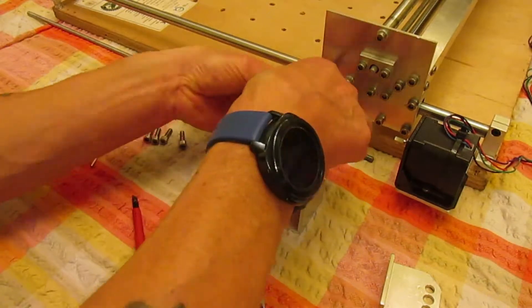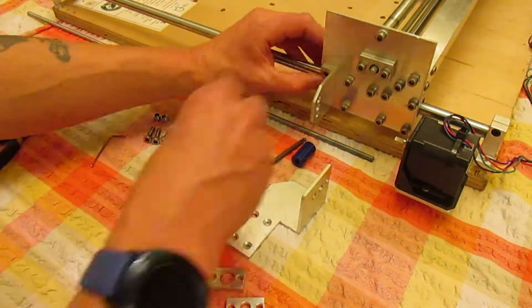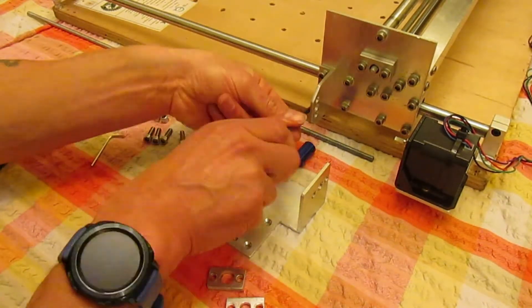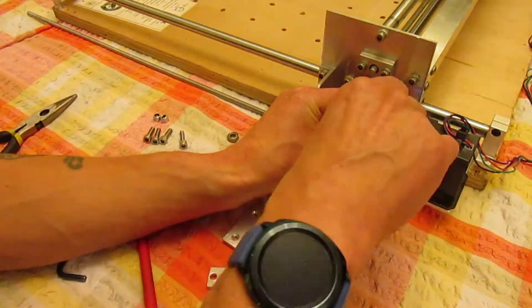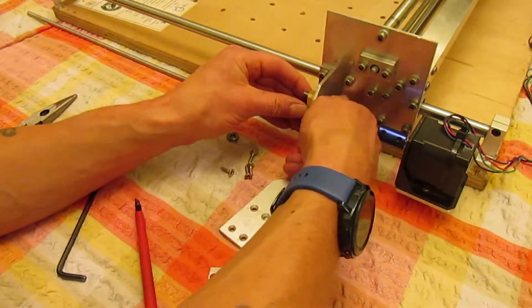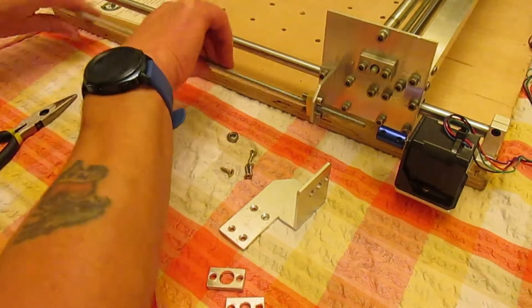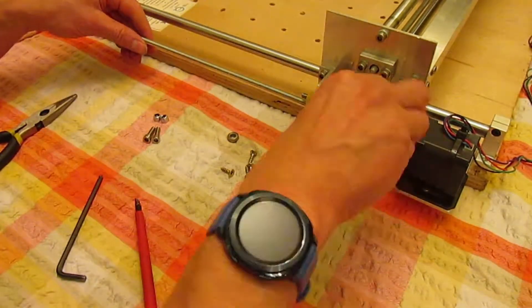The lead screw nut holding bracket. Added the M6 lead screw, which with a one millimeter pitch and 200 steps per revolution, gives a five micron movement per step without using micro stepping.